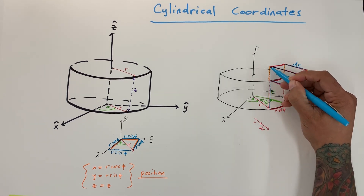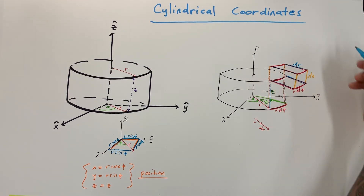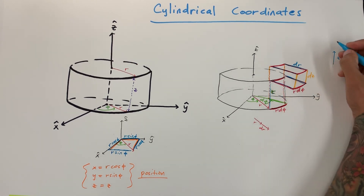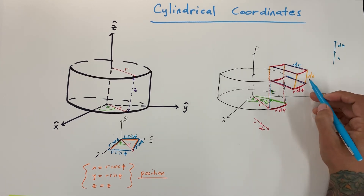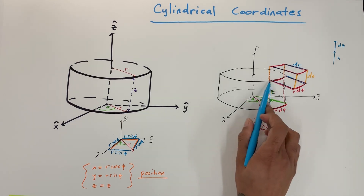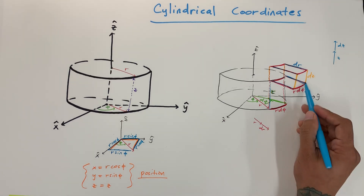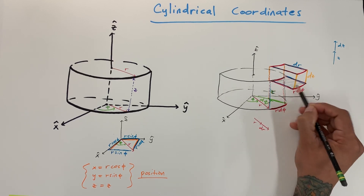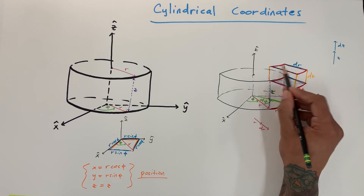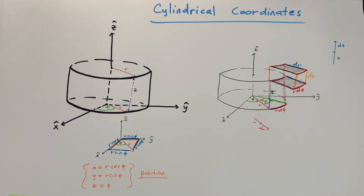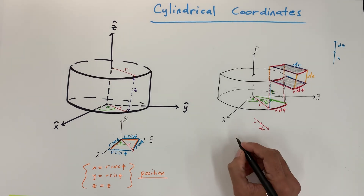The original cylinder had length Z, and extending it further adds dZ — the same way that R extended outward made dr. So we have a differential area as the floor and roof of this little element. Now with those three pieces we can write our volume element.